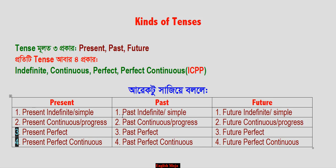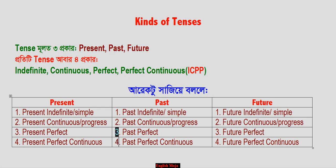Past: Number 1 is Past Indefinite — also called Past Simple. Number 2 is Past Continuous — also called Past Progressive. Number 3 is Past Perfect. Number 4 is Past Perfect Continuous.